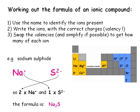Once we know the charges on ions, we have the tools necessary to work out the formula of a substance with ionic bonding. Starting with the name, we write down the ions it's made from with their charges, then we take the numbers — that is the valency — and swap them over. That's the chemical formula.